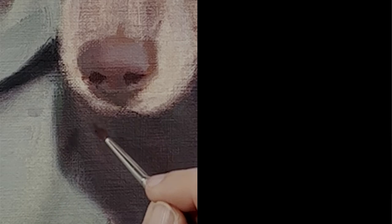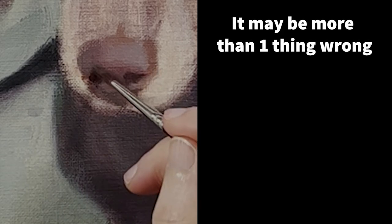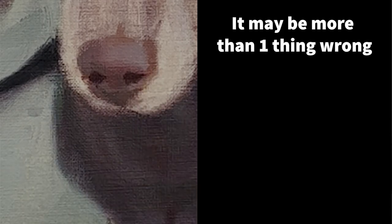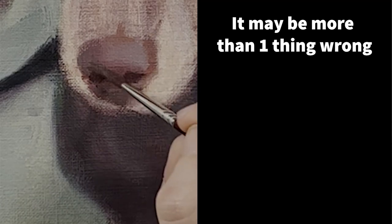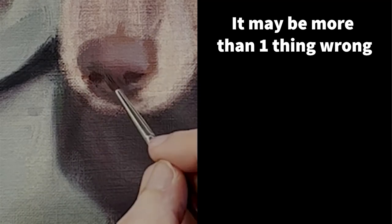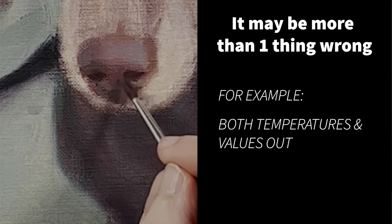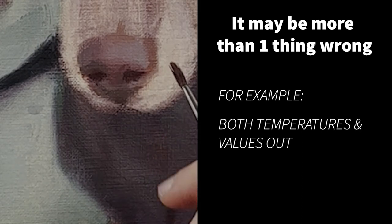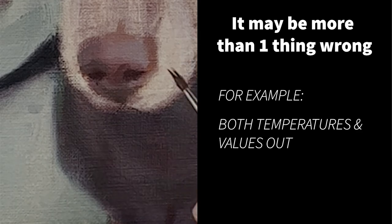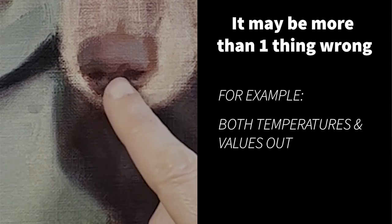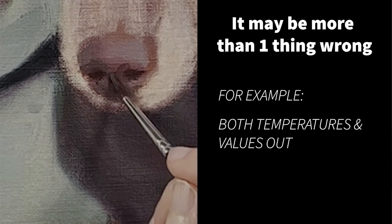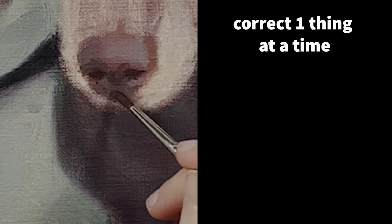You may find also, as you work your way down the five essentials checklist, that it is not just one thing that is out. It may be, for example, that your temperatures and your values are both out. So be careful when you correct one thing, you don't accidentally overcorrect and go too far with it.